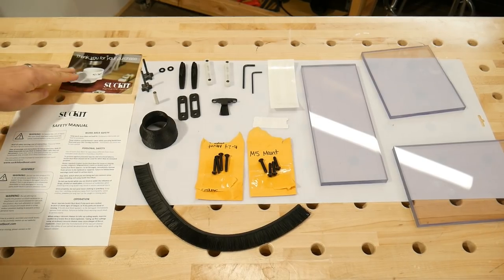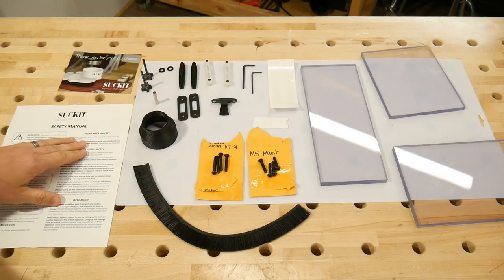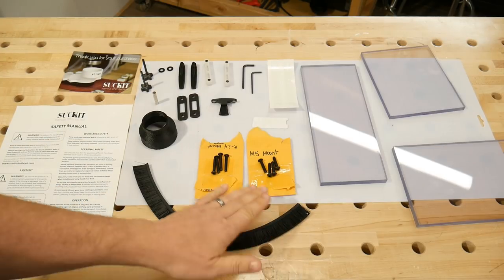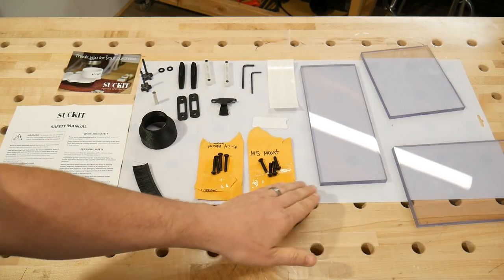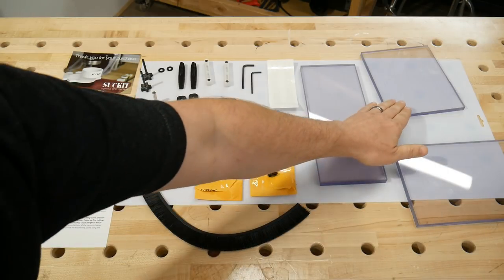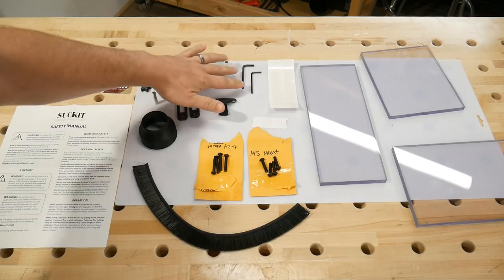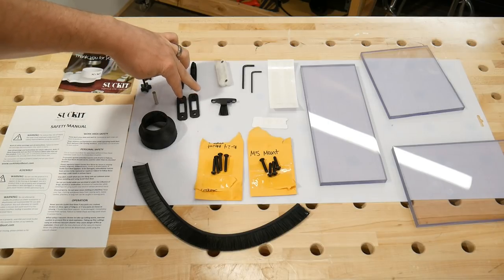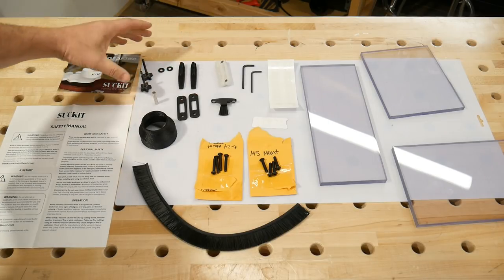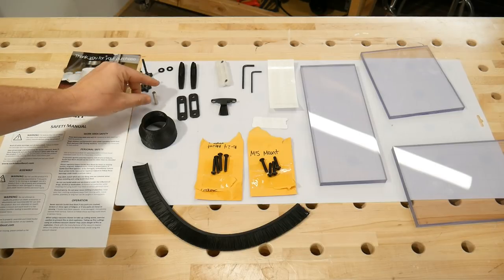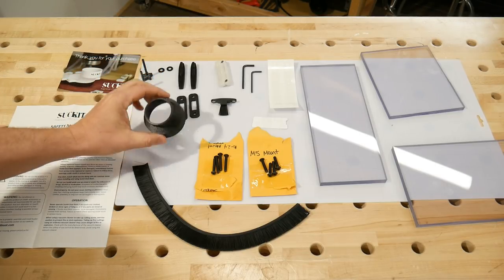Here's everything that'll come in your package. You have the instructions, the brush, the mounting screws, three pieces of acrylic, your stickers, your Allen keys, mount spacer, height adjustment locks, thumb screws, magnets, and the vacuum port.